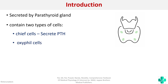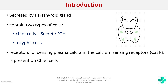An important point to mention is that the receptor for sensing plasma calcium — the calcium sensing receptor (CASR) — is present in the chief cells. That is how the parathyroid cell detects whether the plasma calcium is low or not.